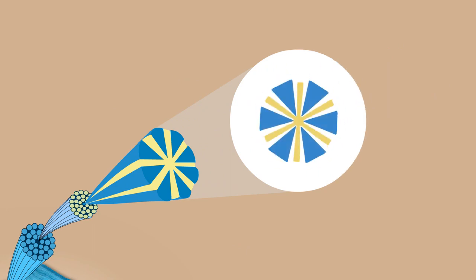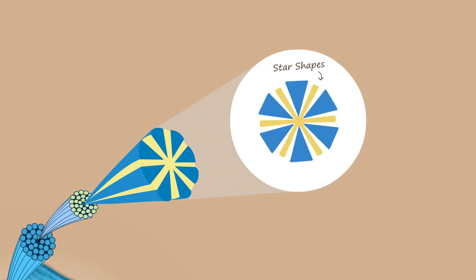These fibers are not only small and numerous, but they are cut into star shapes, which allow them to act like little shovels scooping up the dirt off the surface, cleaning with only water.